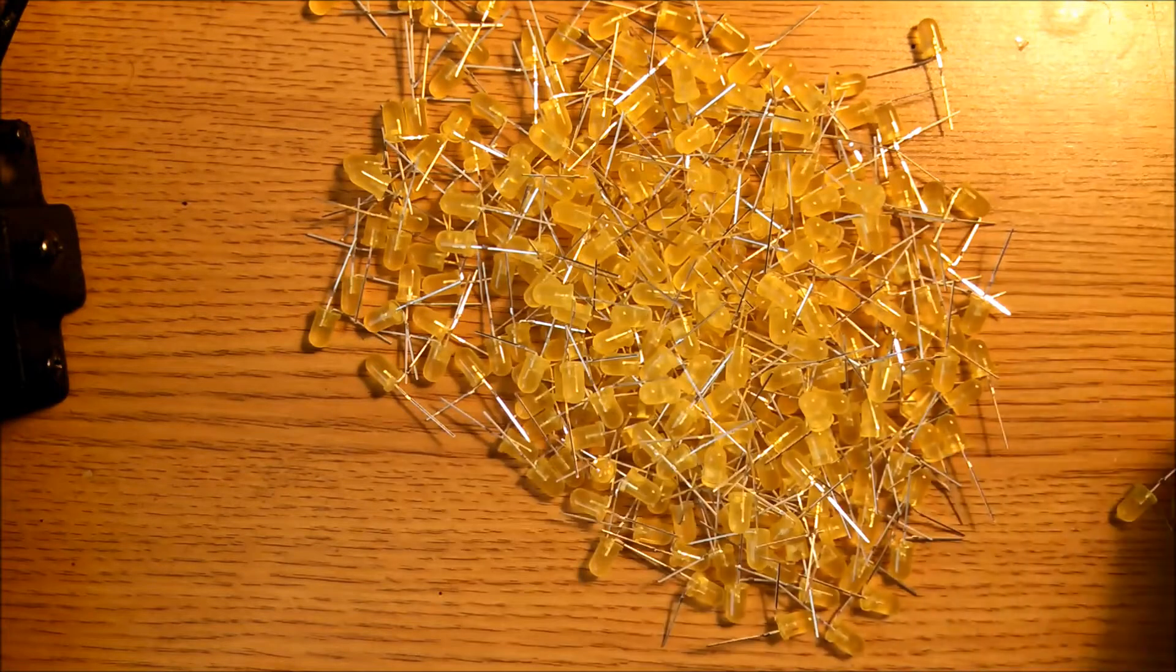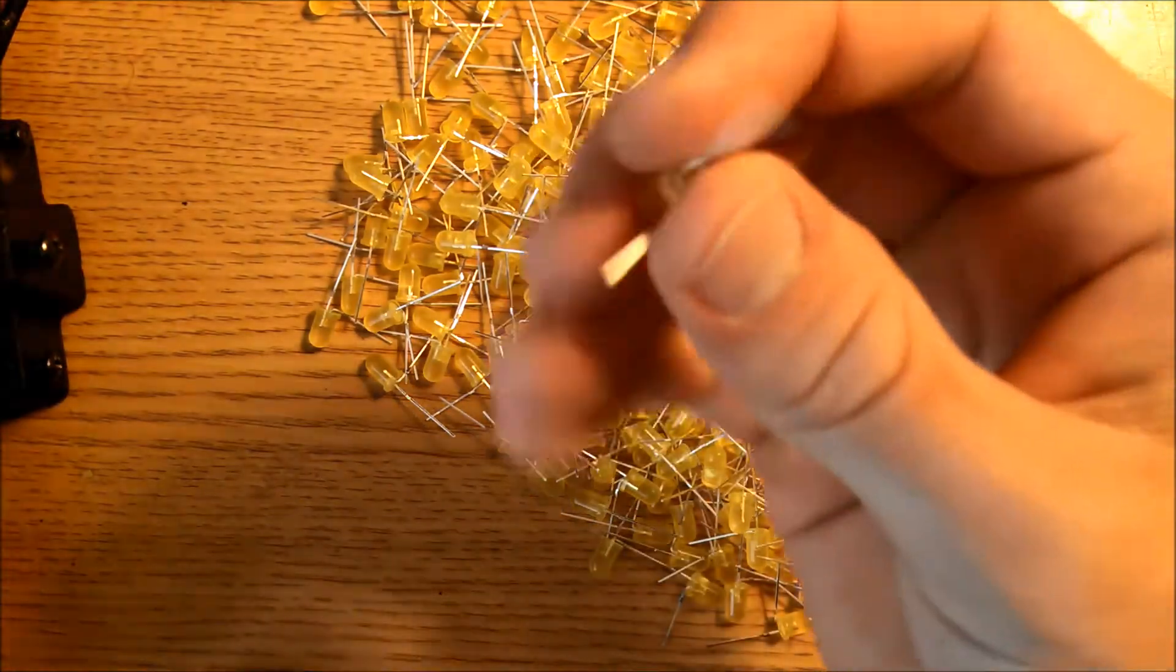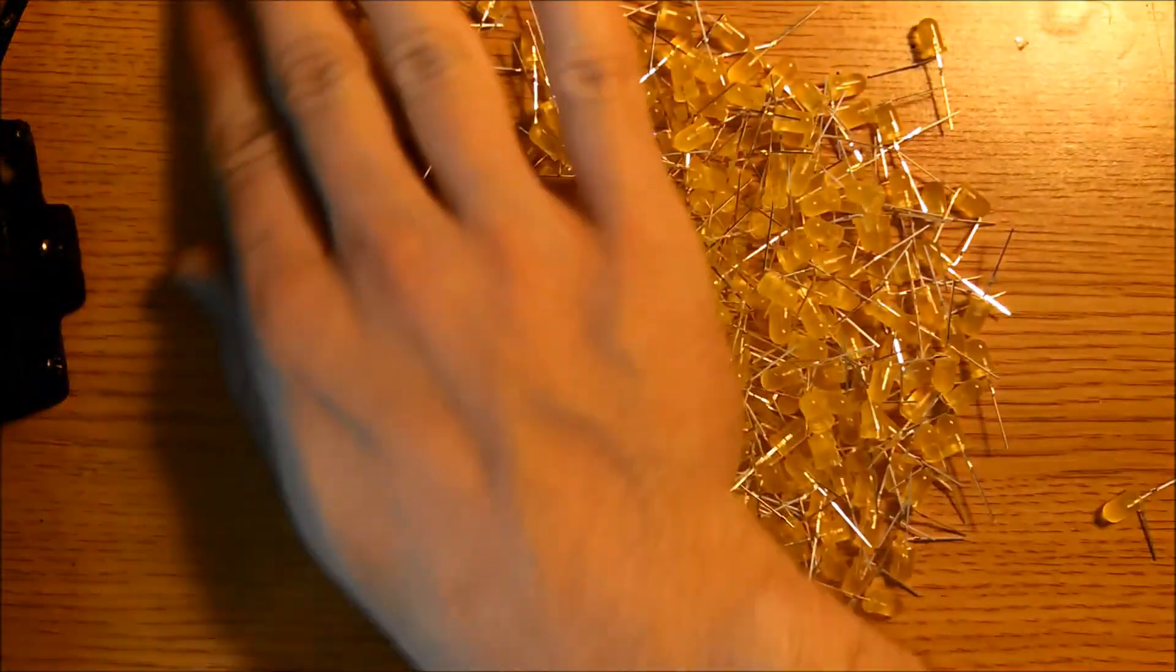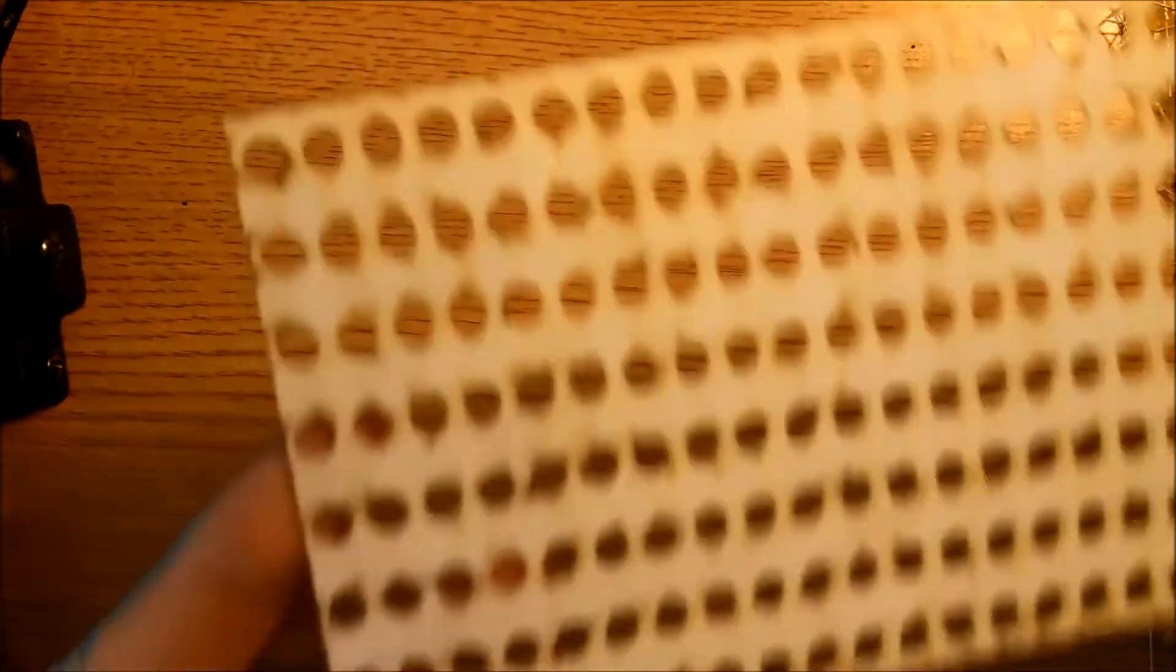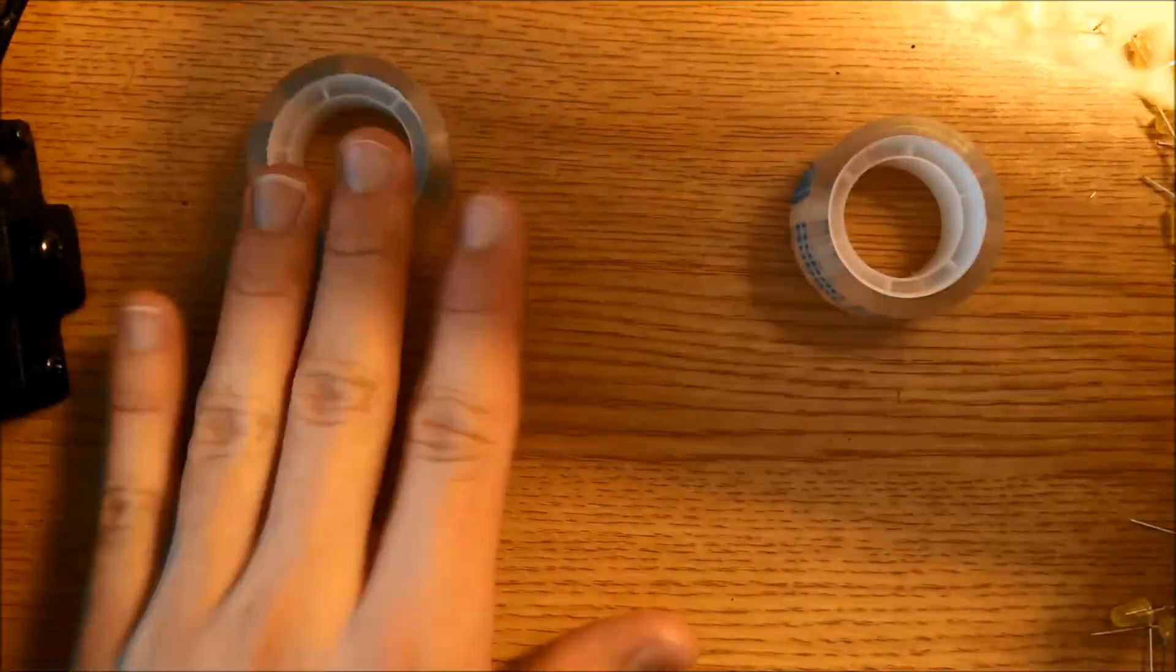Once we've bent all of the LEDs, we're going to push pieces aside and take the laser cut template. What you need to do is find two objects that lift this template slightly off your work surface. I just used two rolls of tape, but it doesn't matter what you use, you can use a book or something.